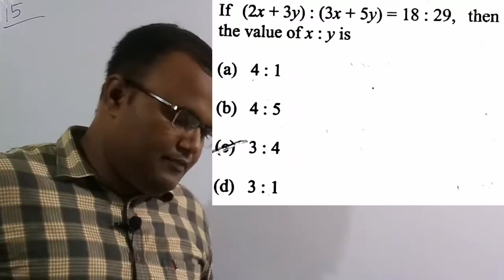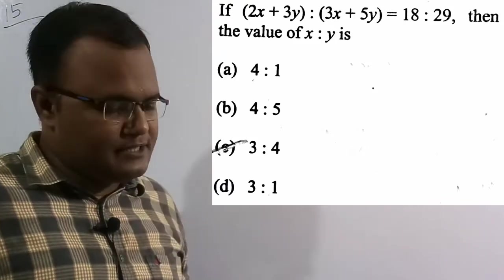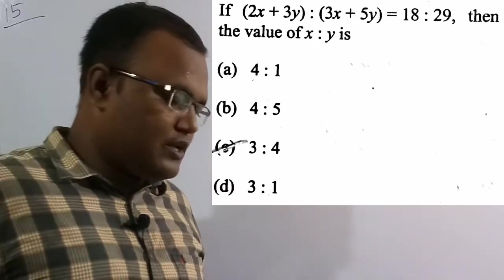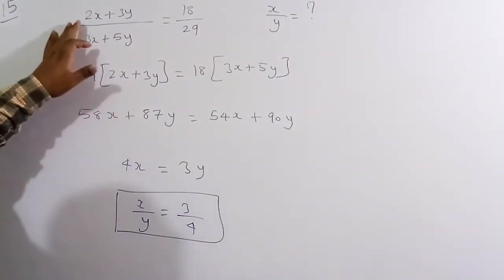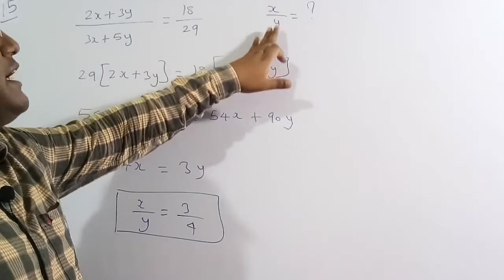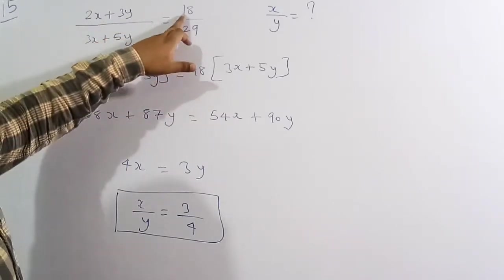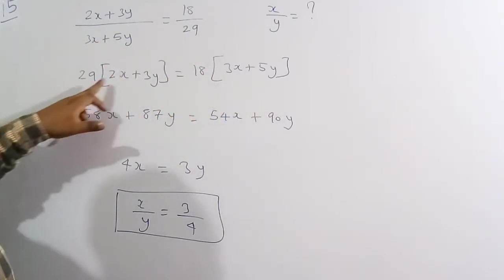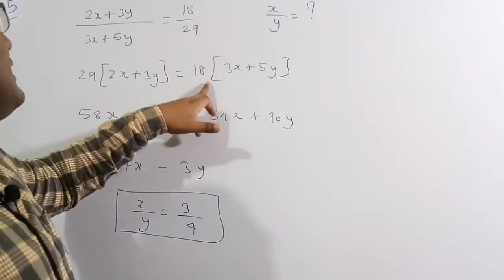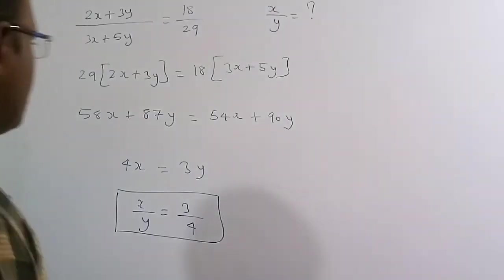Now solving the 15th question: if (2x + 3y):(3x + 5y) = 18:29, find the value of x:y. Option C, 3:4, is correct. From the ratio: (2x + 3y)/(3x + 5y) = 18/29. Cross multiplying: 29(2x + 3y) = 18(3x + 5y), giving 58x + 87y = 54x + 90y.